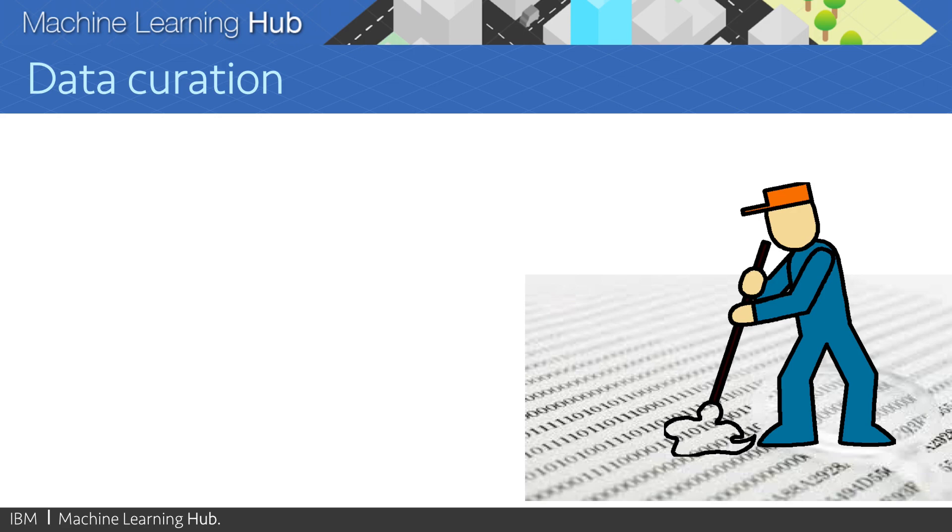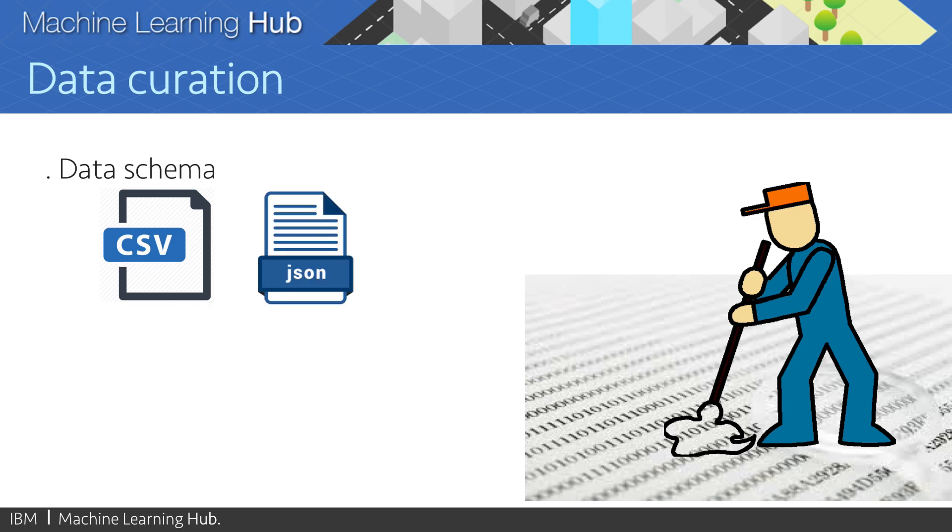A common data curation task is finding the data schema. And this may sound outrageous to many because of the fact that in the relational world, the data schema is always given. However, as data scientists, we are usually provided with a CSV file or a JSON file. And only God knows what the heck is in there. And therefore, finding the data types is very important. And so is finding the semantic types. Which means, is this column an address? Is it a name? Is it a zip code? And so forth.